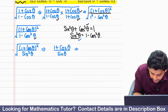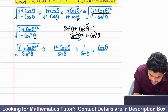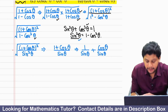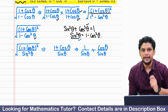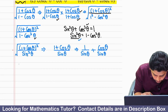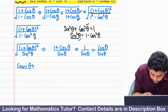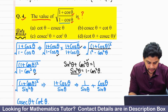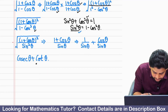We further solve this by splitting: this is 1 upon sin theta plus cos theta upon sin theta. Now, 1 upon sin theta is cosec theta, and cos theta upon sin theta is cot theta. So the final value is cosec theta plus cot theta. Therefore, option B is the correct answer.